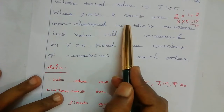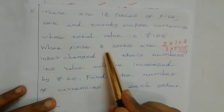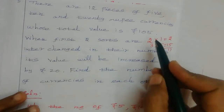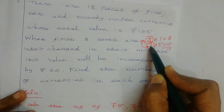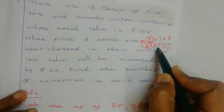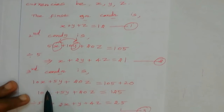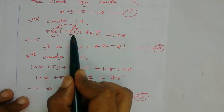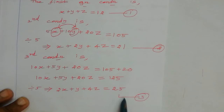The third condition is: when the first two sorts are interchanged, that is x changes into the place of y and y into x. So the number of notes is swapped for the first two denominations: 10 into x plus 5 into y plus 20 into z equals 125. Dividing all terms by 5, we get 2x plus y plus 4z equal to 25. Let us take this as equation number three.